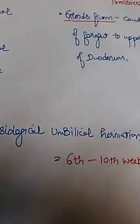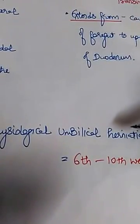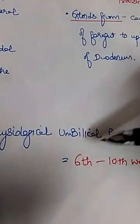Now one more thing, just for repetition, that normal physiological umbilical herniation occurs from 6th to 10th week.